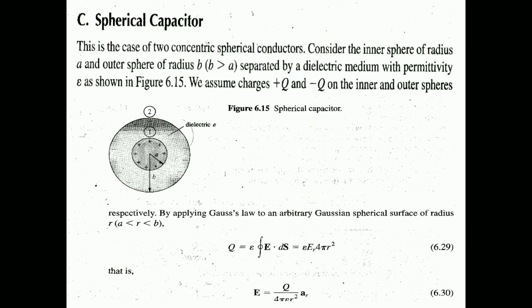Next is the spherical capacitor. We assume two concentric spherical conductors: the inner concentric sphere has radius a and the outer concentric sphere has radius b. The radius r varies from a to b. The inner sphere carries positive charge and the outer sphere carries negative charge. As per Gauss's law, Q equals the integral of D dot dS, and integrating dS in spherical coordinates — r d_theta times r sin(theta) d_phi — gives 4pi r squared. Therefore, E equals Q divided by 4pi epsilon r squared in the a_r direction.